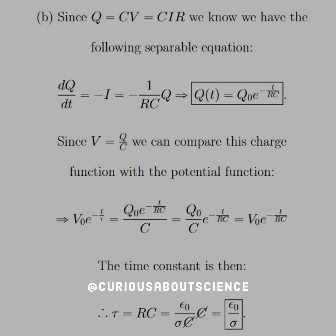So V-not e to the negative t over tau. Okay, so let's go ahead and plug in Q-not over C, and we see we get the same thing left and right.